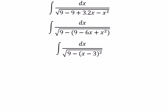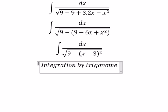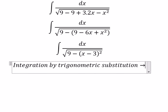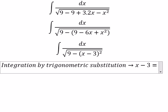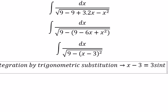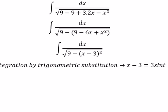So we can use integration by trigonometric substitution. We put x minus 3 equal to 3 sine t. So we got dx equal to 3 cos t dt.